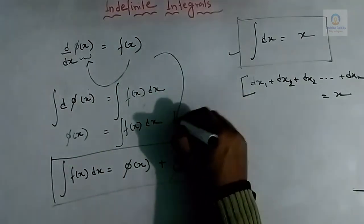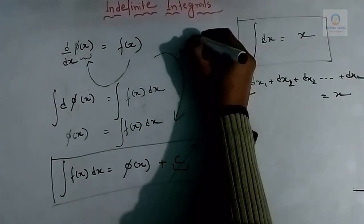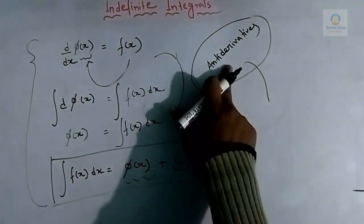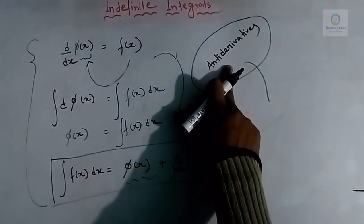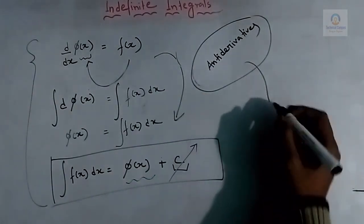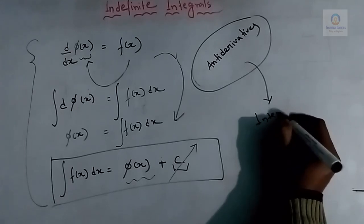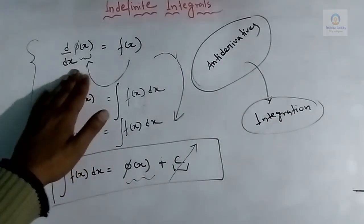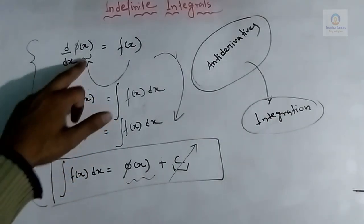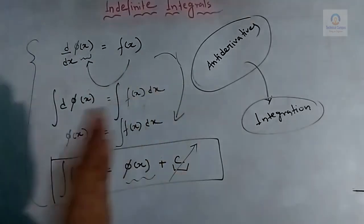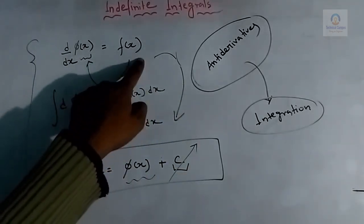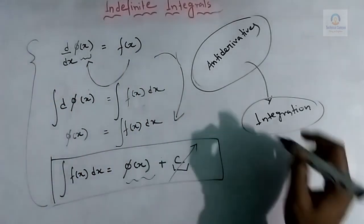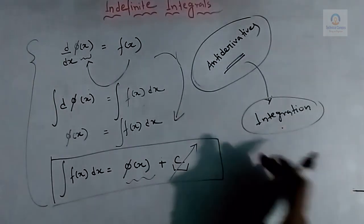The simplest way to define integration is that it is basically the anti-derivative — that means the opposite of performing differentiation is known as integration. The process of calculating the anti-derivative is known as integration. In our example, differentiating phi of x gives f of x; in the opposite way, integrating f of x gives phi of x. So anti-derivative means integration, or the opposite of differentiation is integration.